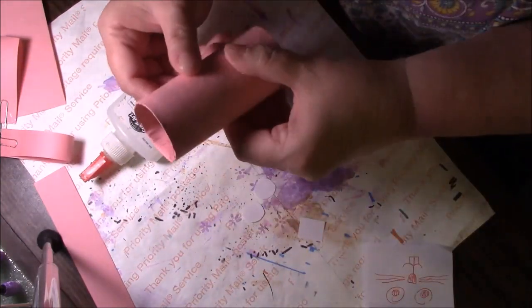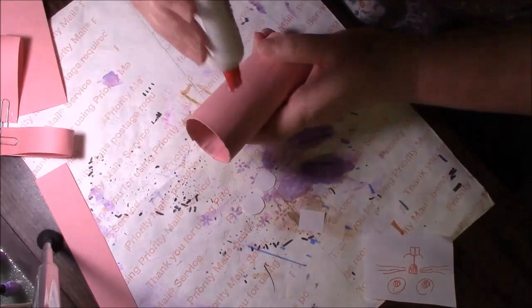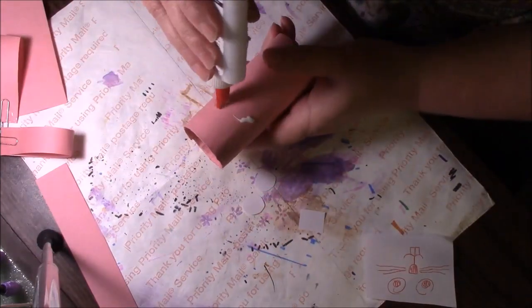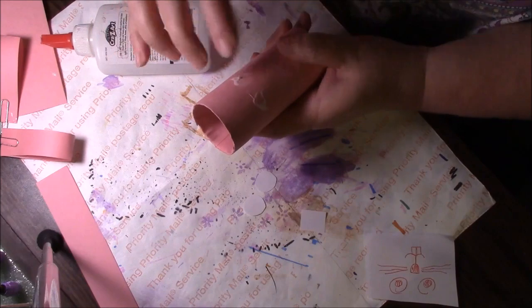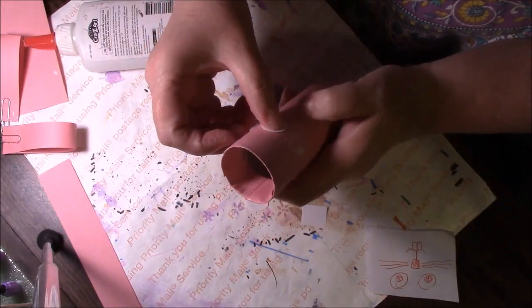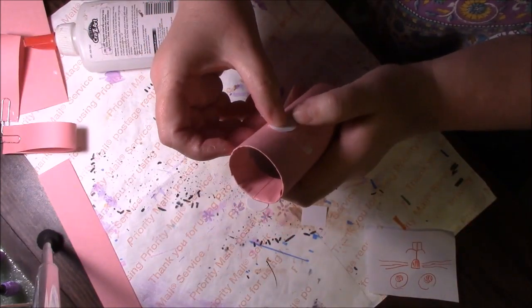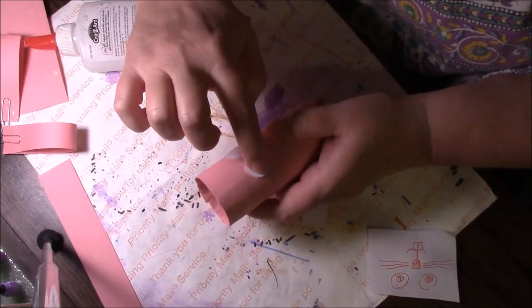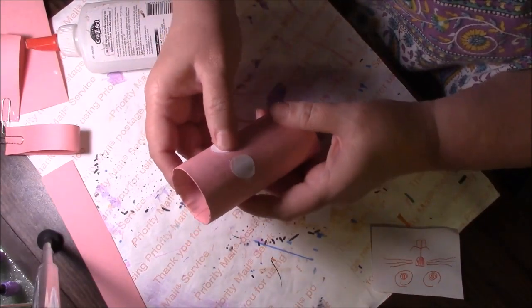So I'm just going to put the seam to the back and in the front I will just put some glue. Glue those eyes on. They're probably a little bit big.